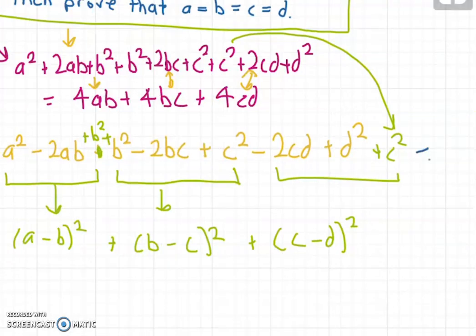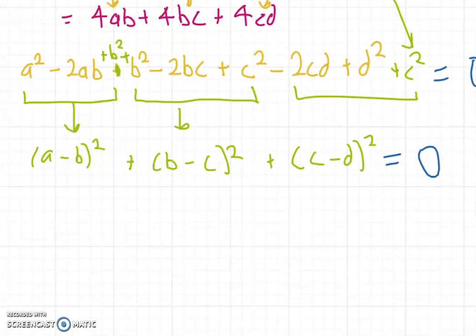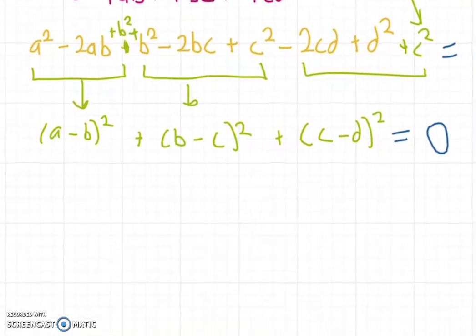And the right hand side of this equation is equal to 0. So now we have the sum of 3 squares of numbers is equal to 0. So (a-b)² + (b-c)² + (c-d)² = 0.